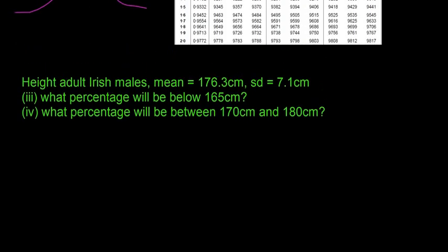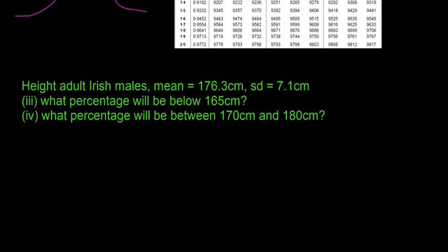So again, it's the same numbers, so it's the height of adult Irish males. The mean is 176.3 cm and the standard deviation is 7.1 cm. Okay, new questions are: what percentage will be below 165 cm? And then what percentage will be between 170 cm and 180 cm? So those are the two questions we have to answer.